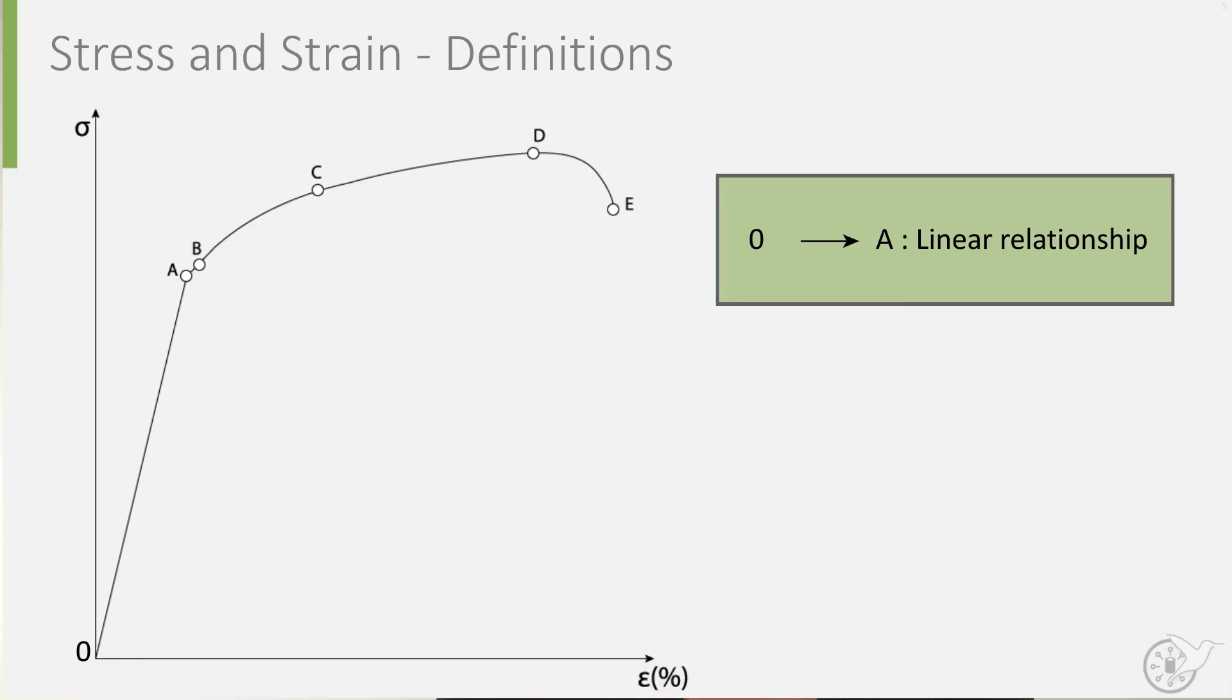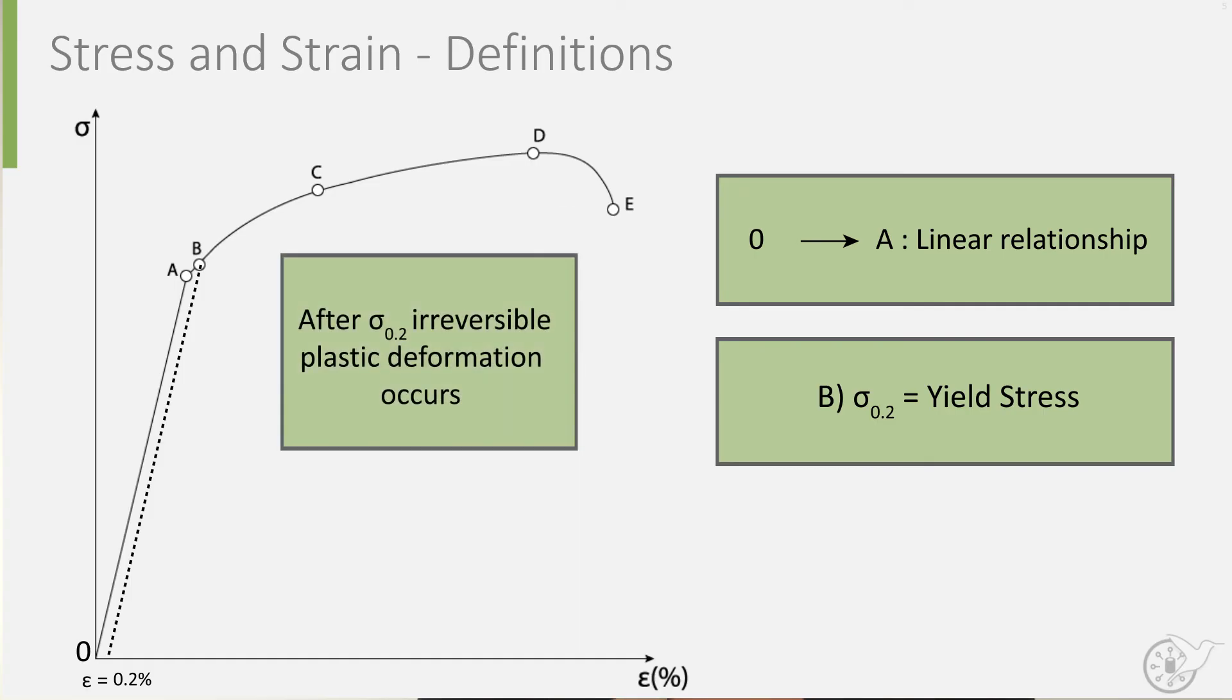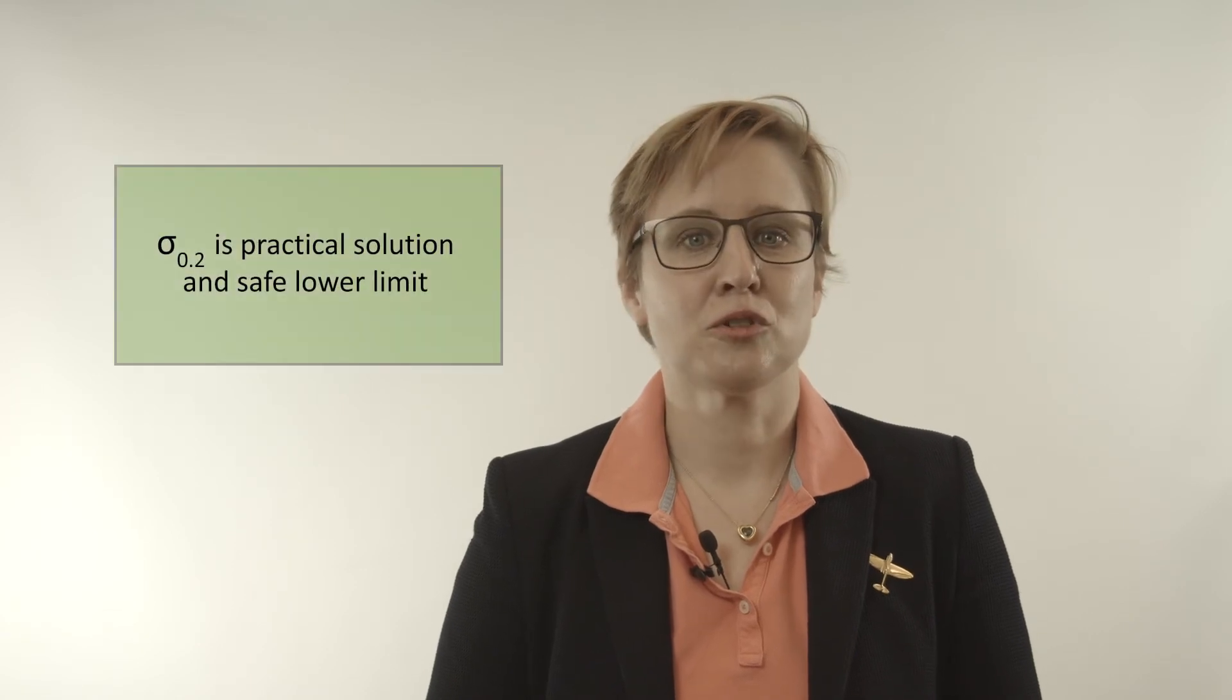Next in the diagram, you can observe a point B, which has been named sigma 0.2, or yield stress. At this location, 0.2% offset of the linear elastic slope, from which point on, plastic irreversible deformation takes place. As it is difficult to exactly determine the transition from elastic to plastic behavior known as yielding, this is a practical solution and safe lower limit used to define when this behavior starts to occur.